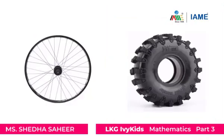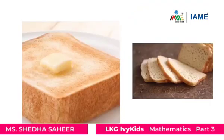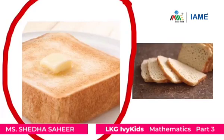Can you see two tires here? Which one is the thin tire and which one is the thick tire? The circled tire is a thick tire and the other one is a thin tire. Can you see two breads here? Which slice of bread is thick and which is thin? The circled sliced bread is thick and the other one is the thin sliced bread.